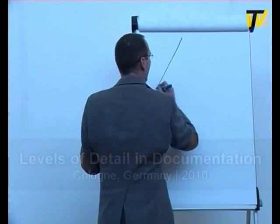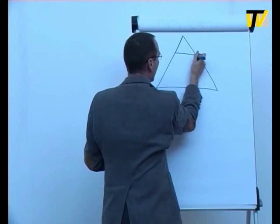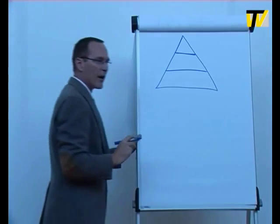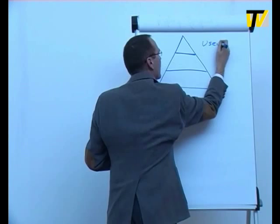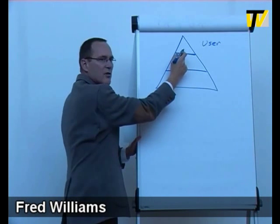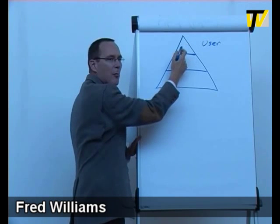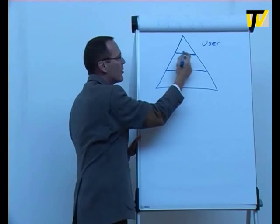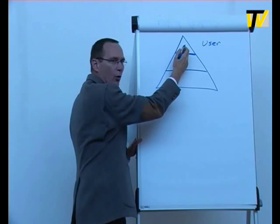A typical way to represent this is in a pyramidal form, where users typically are only interested in the very top of the information pyramid, and that's going to be the functionality they need to accomplish their goals.